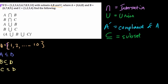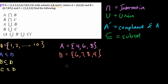And then they outline what is actually in each set. A has the numbers 4, 6, and 8. And then B has the numbers 6, 7, 8, and 9. And C has the numbers 1, 2, 3, and 4.